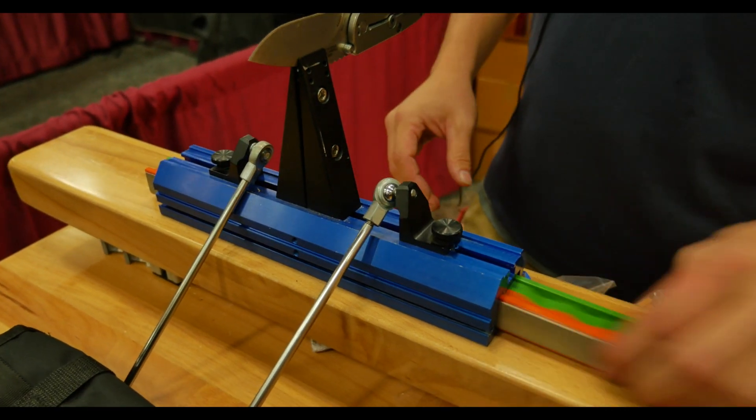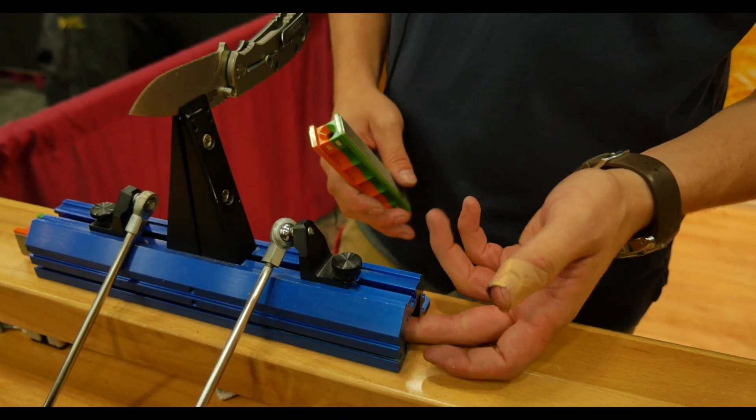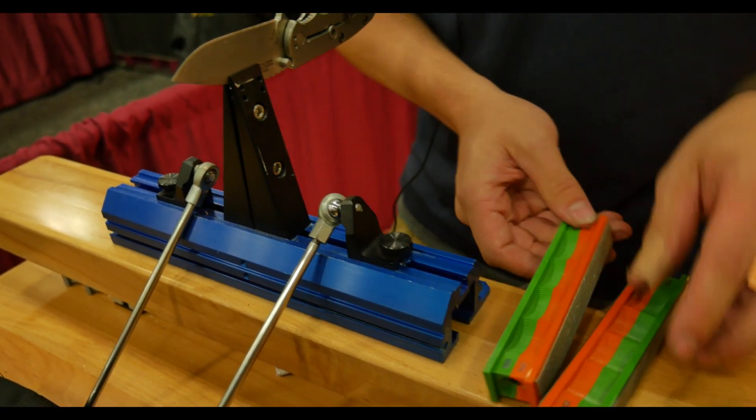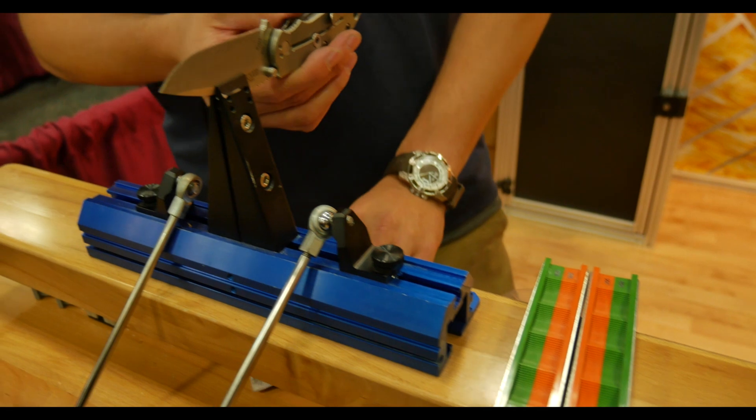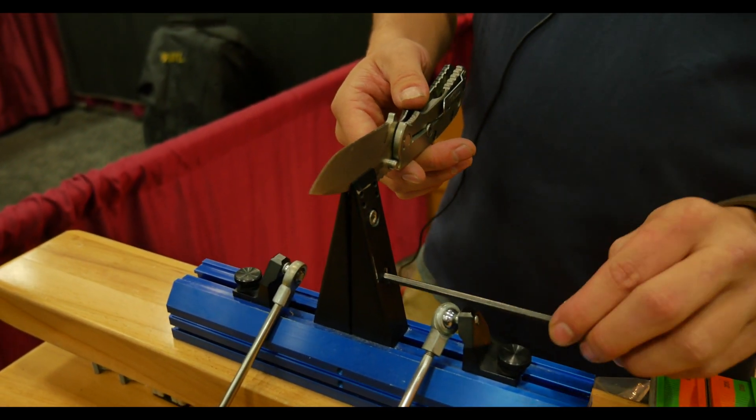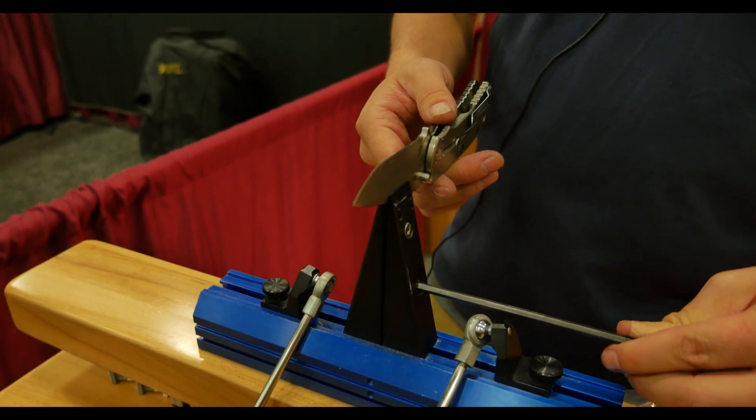And then the stones of the sharpener, these are diamond stones and they store inside the base. It comes with a 200 and a 600 grit diamond stone. So the way the sharpener works, I've got the knife mounted here in the vise and it's just done with this Allen wrench here to operate the vise.